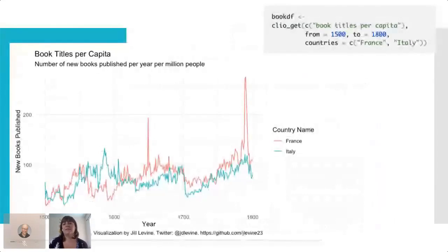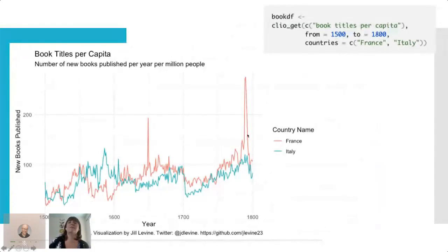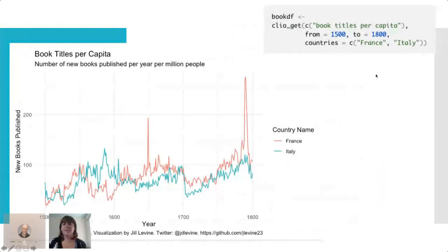There are a lot of cool possibilities. You can compare two variables within a couple of countries — this is comparing two variables for one variable in two countries. In just one call you can specify the type of data, the range, and the number of countries, saving a ton of time.